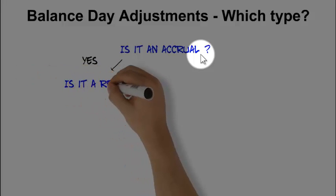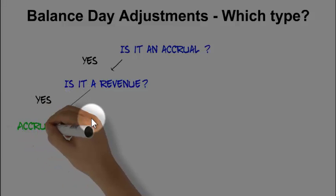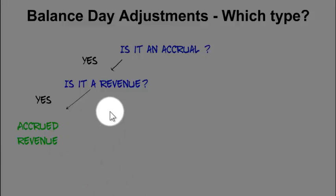If it's an accrual, then you can ask the question: Is it a revenue? Remember there's only two types of accruals, so by definition if it's yes, it must be an accrued revenue. Obviously, in this instance if it's not a revenue, we're talking about an accrued expense. So I've dealt with two accruals.